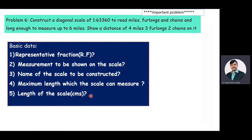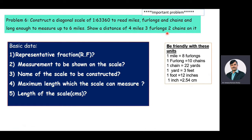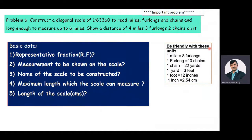Before answering these questions we need to have a perfect idea about unit conversions. One mile is equal to eight furlongs. One furlong is equal to ten chains. One chain is equal to 22 yards. One yard is equal to three feet. One foot is equal to 12 inches. One inch is equal to 2.54 centimeters.